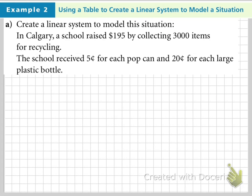In example 2, we're going to try to create a linear system to model this situation. In Calgary, a school raised $195 by collecting 3,000 items for recycling. The school received 5 cents for each pop can and 20 cents for each large plastic bottle.